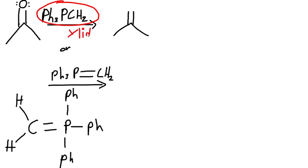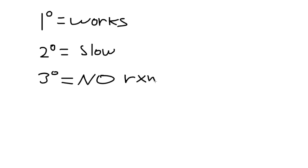And this is called a ylid. We have the PPH3 connected to a carbon group, an R group. So this will be called a ylid. Before we go any further, let's look at some rules for the triphenylphosphine. We have primary, that works. Secondary, we have a slow reaction. And we have tertiary. There is no reaction.